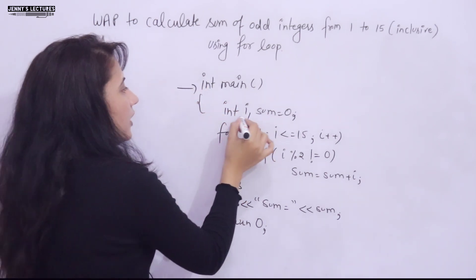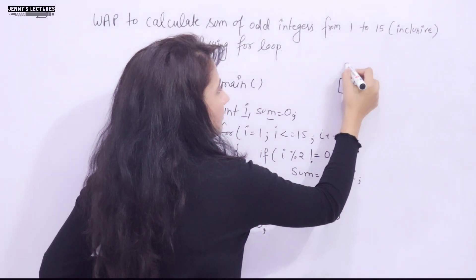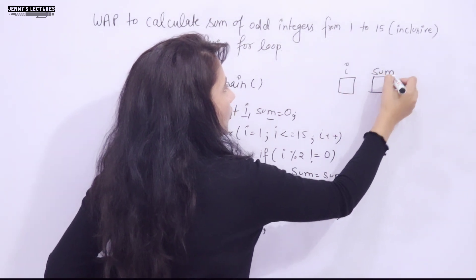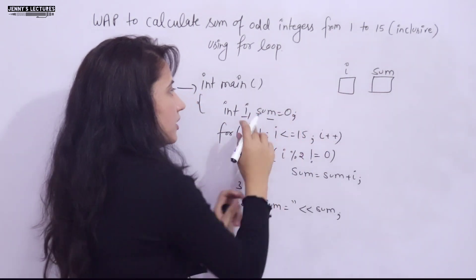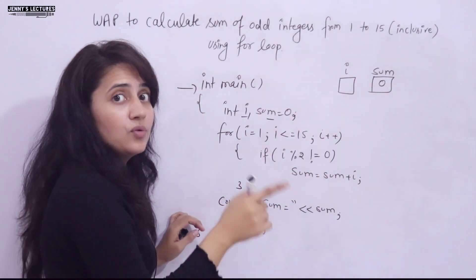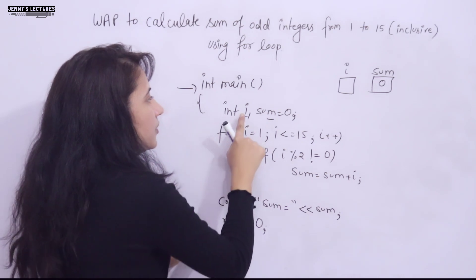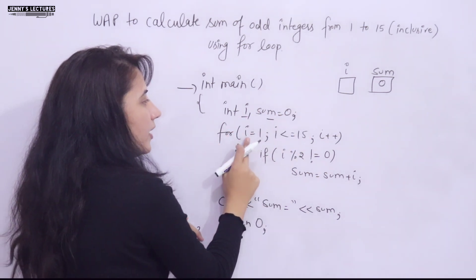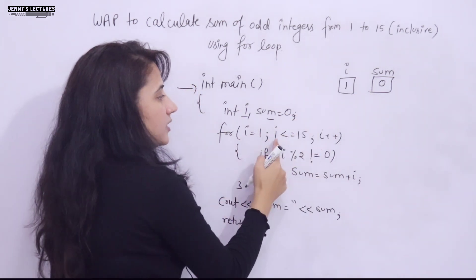When you run the program, control goes to the main function. Two variables, i and sum, are allocated in memory — each is an int, so 4 bytes each. i has no initial value yet, and sum has been initialized to 0.